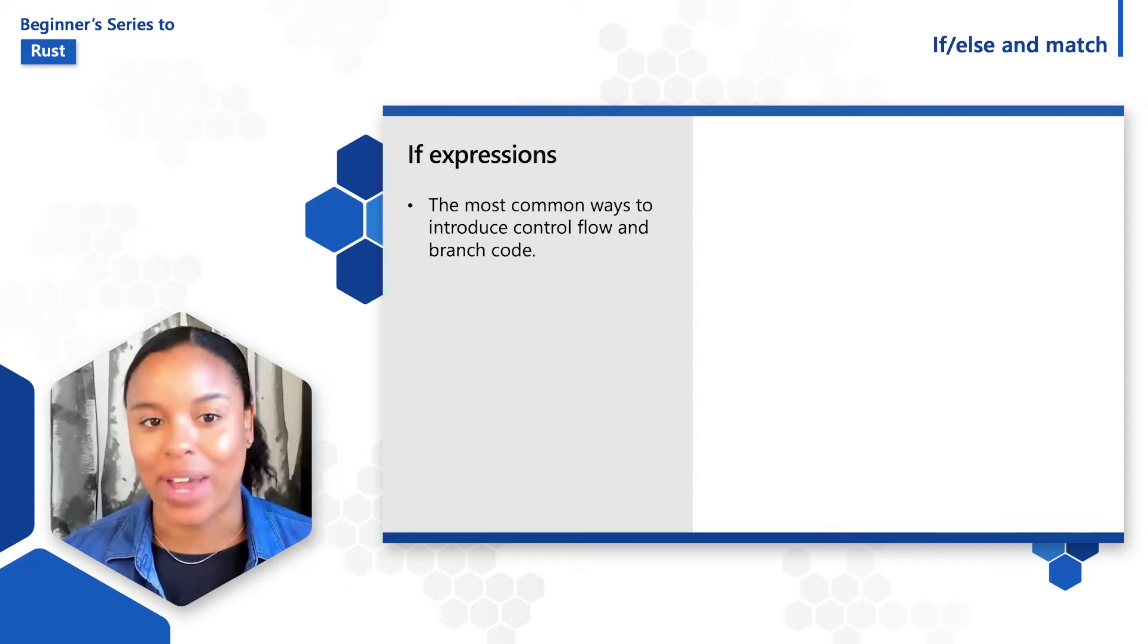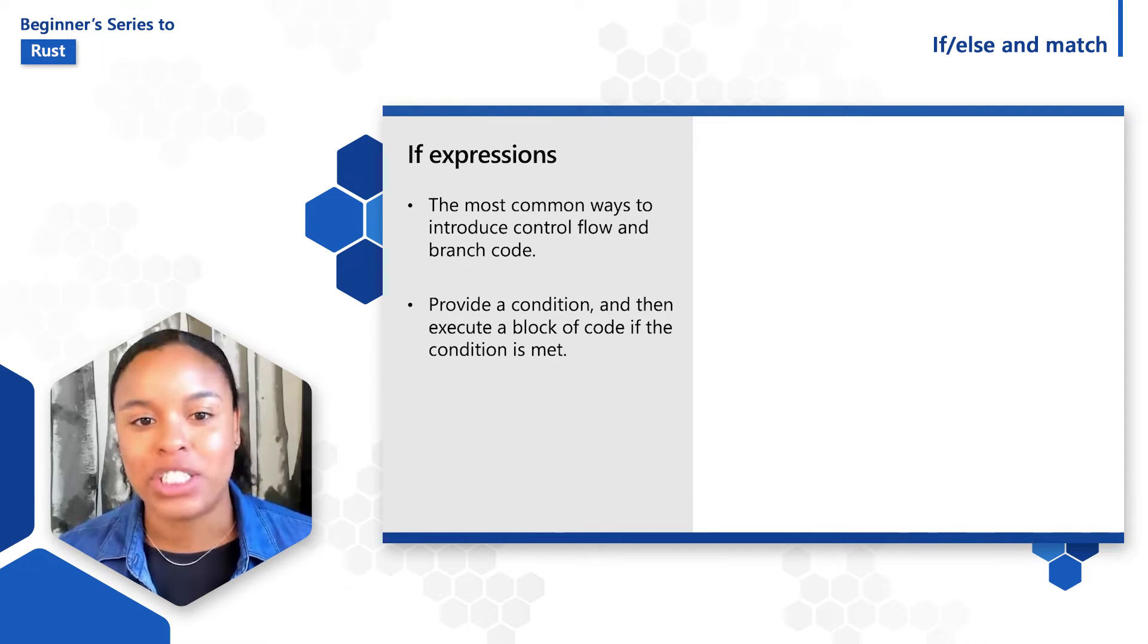If conditions are the most common ways to introduce control flow and branch code. The way they work is you provide a condition and then execute a block of code if the condition is met.